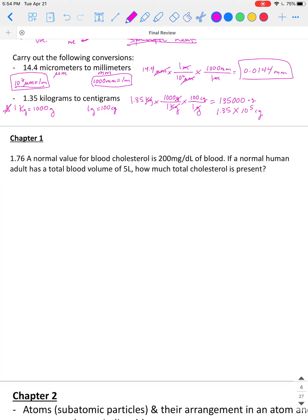It says a normal value for blood cholesterol is 200 mg per deciliter of blood. If a normal human adult has a total blood volume of 5 liters, how much total cholesterol is present?